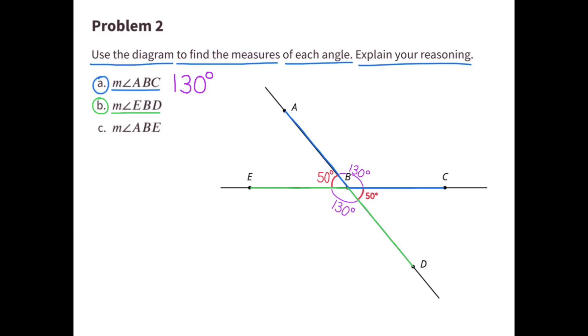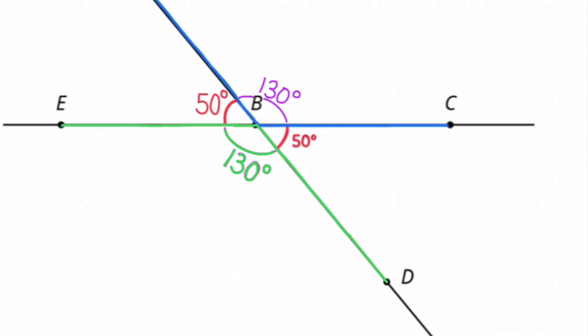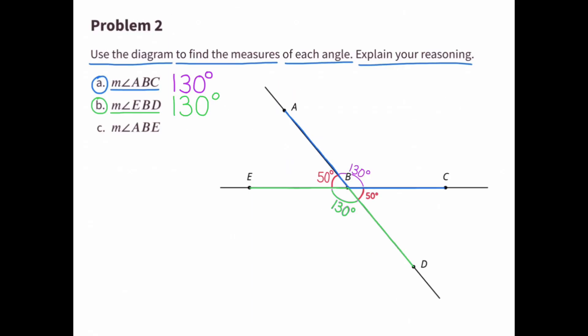B. What is the measure of angle EBD? You can see angle EBD in green. And again, 130 degrees plus 50 degrees equals 180 degrees. So angle EBD measures 130 degrees.